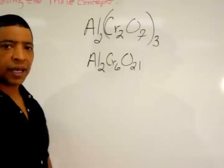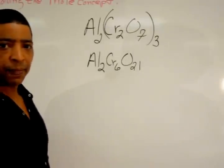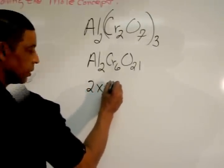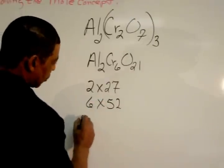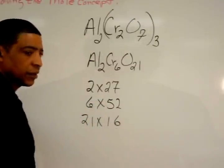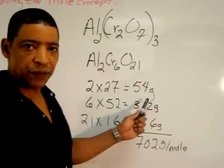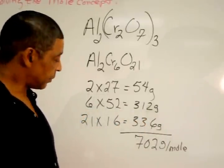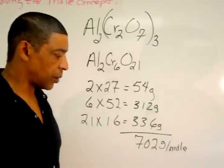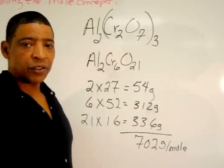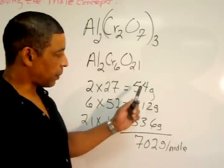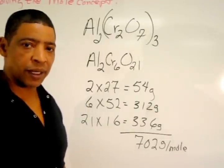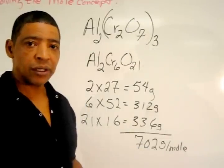Now finding the formula mass is simply a matter of using the periodic table to identify the masses of each element. This will give 2 times 27 for Al, 6 times 52 for Cr, and 21 times 16 for oxygen. 2 times 27 is equal to 54 grams, 6 times 52 grams is equal to 312 grams, and 21 times 16 grams is equal to 336 grams. To determine the formula mass of the compound, simply add all the masses calculated for the different elements. This will give a formula mass for aluminum dichromate to be 702 grams per mole.